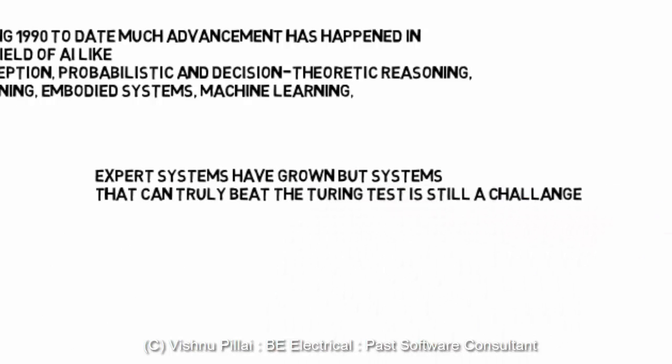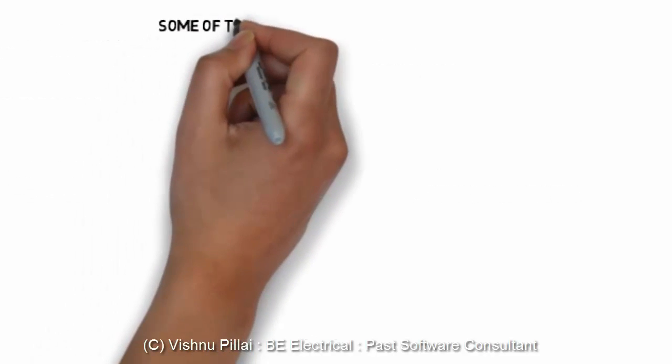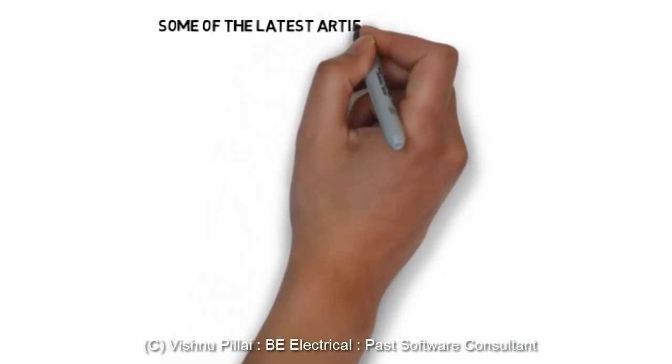The one system that can truly beat the Turing test is still a challenge for scientists and experts. The Turing test assesses the ability of an artificially intelligent system such that an evaluator evaluating both humans and a computer should not be able to differentiate between them based on written answers to the evaluator's questions.